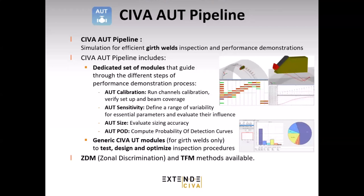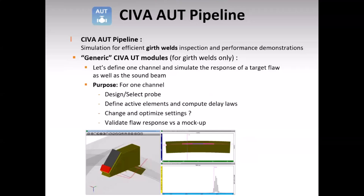SIVA AUT pipeline is available today for ZDM and TFM techniques. In the generic SIVA tools within SIVA AUT, the purpose is to define one channel, then simulate the response of the target flaw. Different tools are available — maybe to simulate the sound beam so you can design and select a probe, define phase array settings, delay laws, and range of elements, then change and optimize settings, and validate the response obtained by simulation against a real mockup.